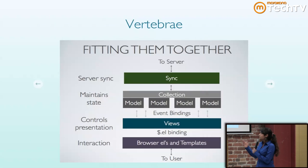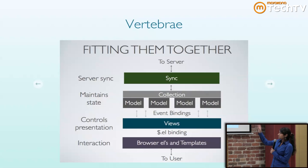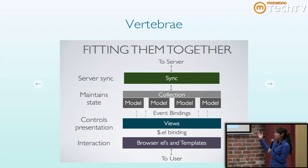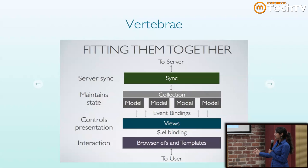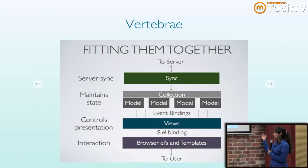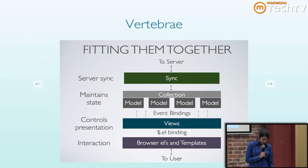Here's an overview of how things fit together. Between the server, sync deals with Ajax requests. A collection is an ordered set of models, and the models and views are bound by a hash that you declare — it maps events to actual actions on the model. That's bound to the browser through jQuery, and that's how your user interacts with it.